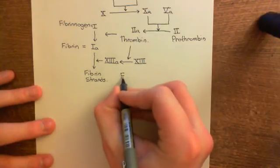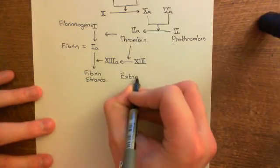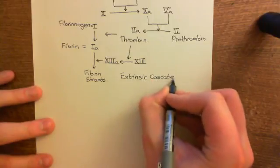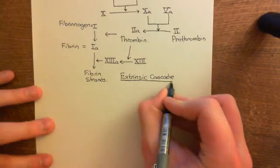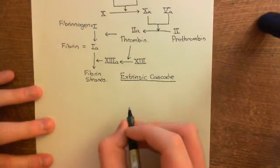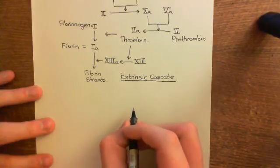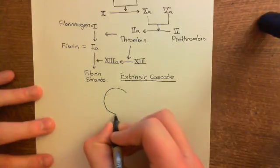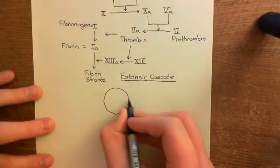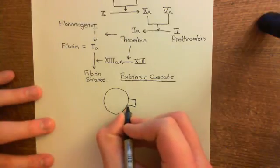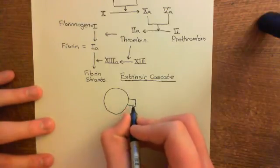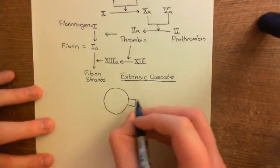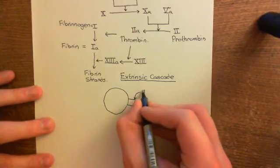The extrinsic coagulation cascade is activated by a different protein than collagen. There is a protein on the surface of cells in the peripheral tissue fluid known as tissue factor. This is a protein that coagulation factors are never allowed to see when they're in the blood — it's not within the blood and not on the apical surface of endothelial cells, so coagulation factors circulating in the bloodstream will never see it.